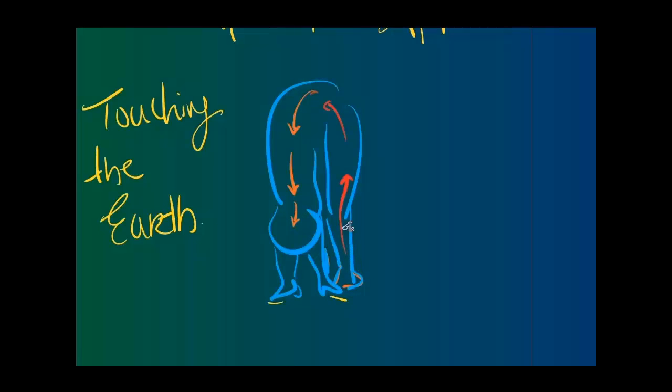But the essence of this Qi Gong Touching the Earth is actually stretching the governing vessel. There is a vessel that goes all the way from the tailbone all the way through to the top of the crown. This is called the Governing Meridian.